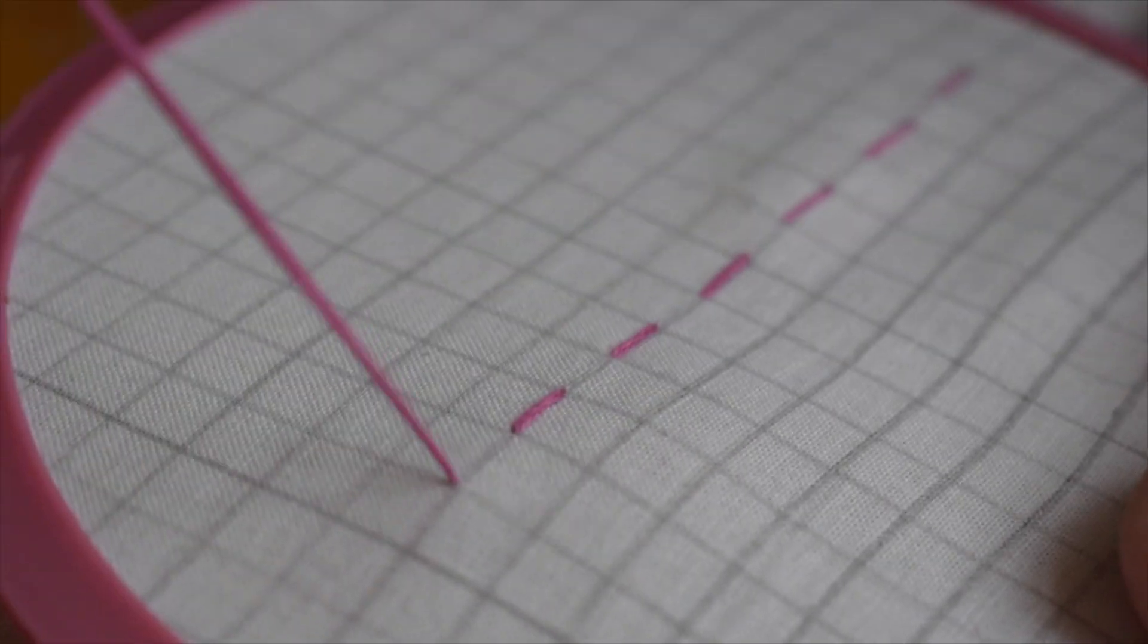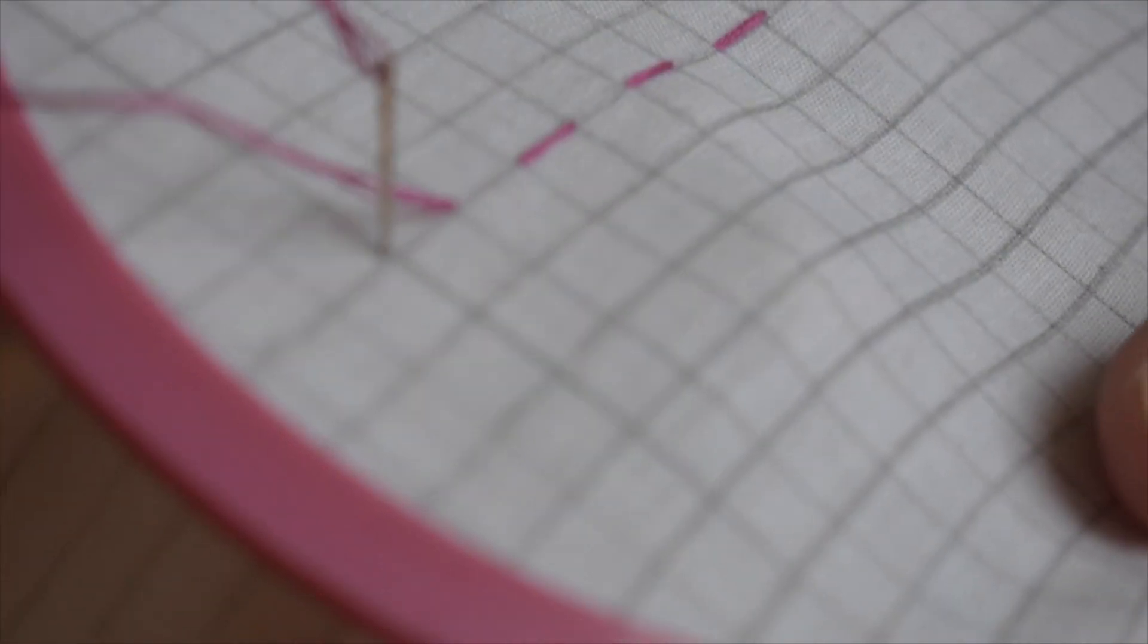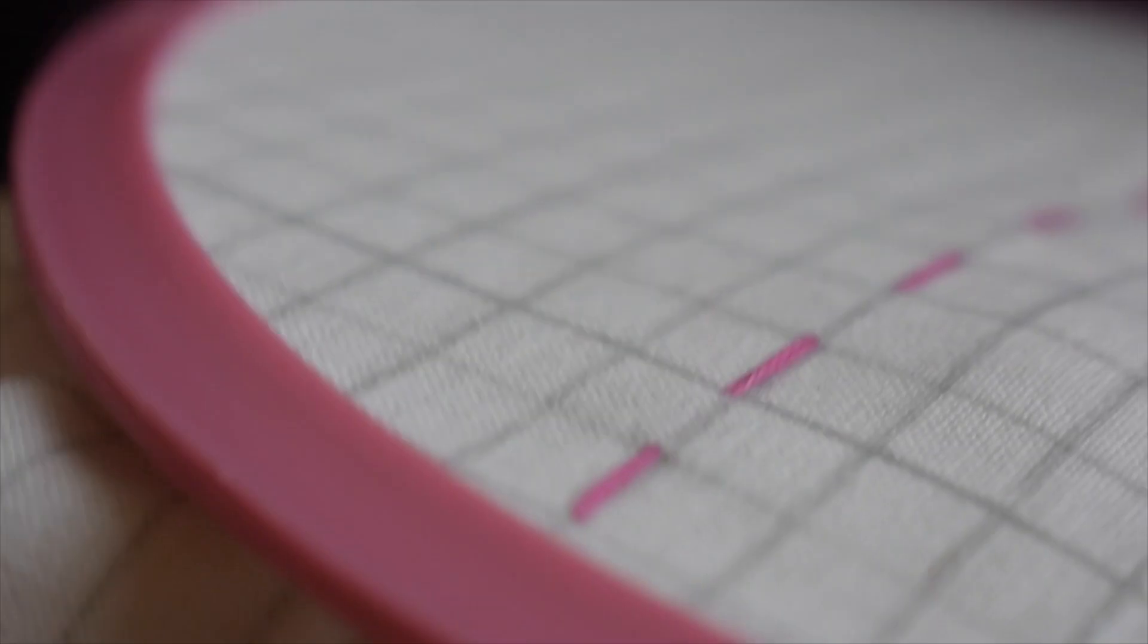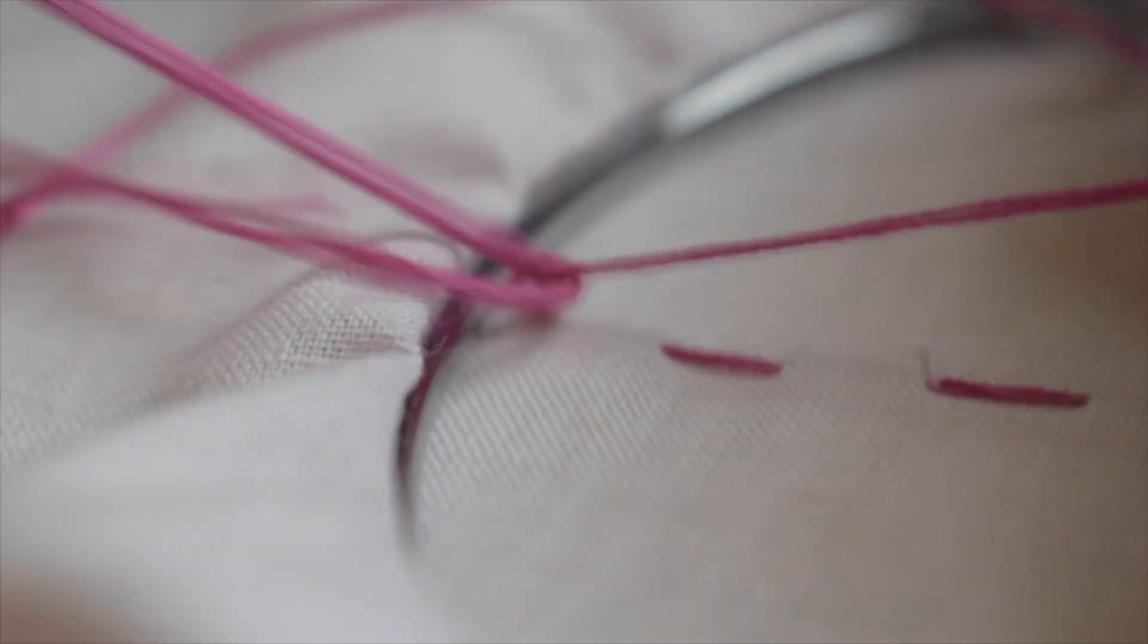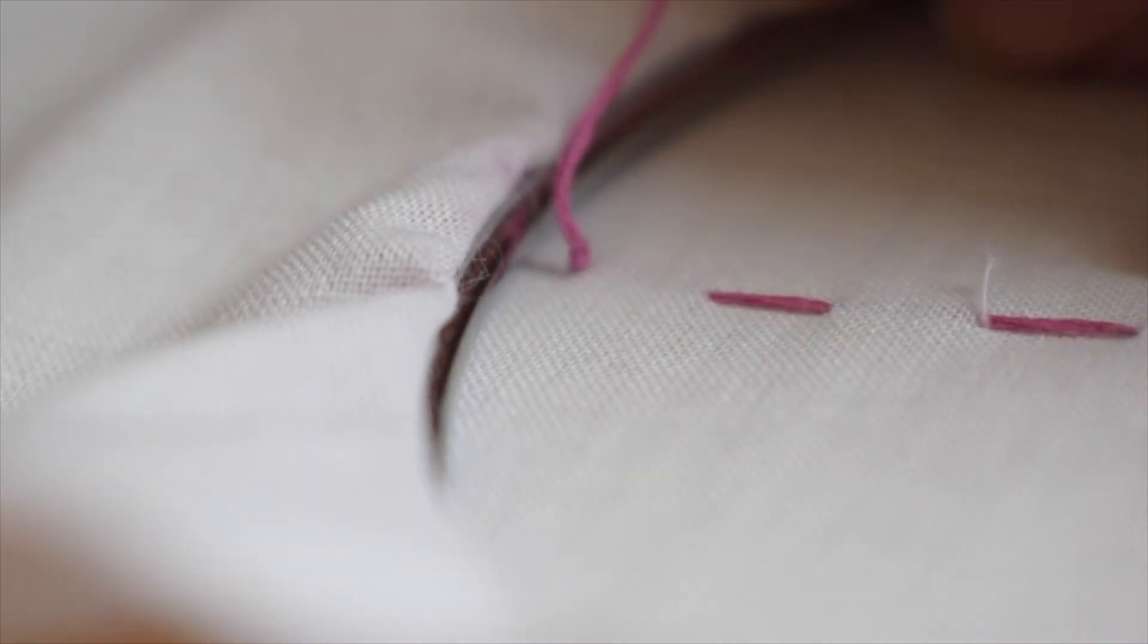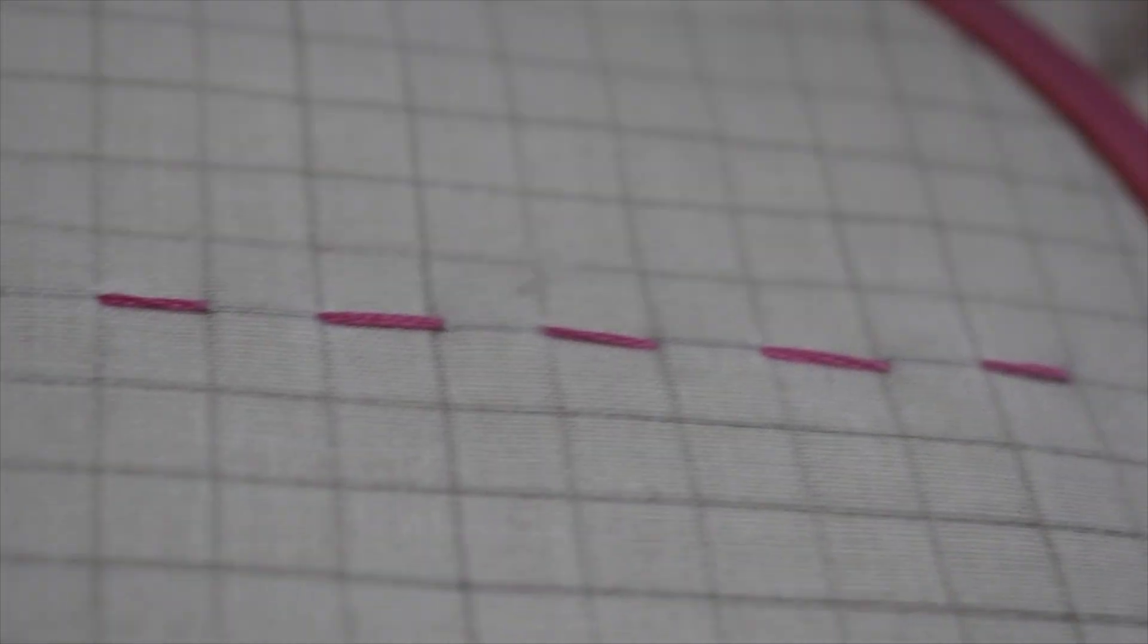So when you get to the end, you're going to turn over the hoop. You'll put the needle down through, turn over the hoop and you will make a knot, cut the end of the thread. Now the next one we're going to do, I'm going to make a running stitch and then I'll show you what I do to embellish that running stitch.